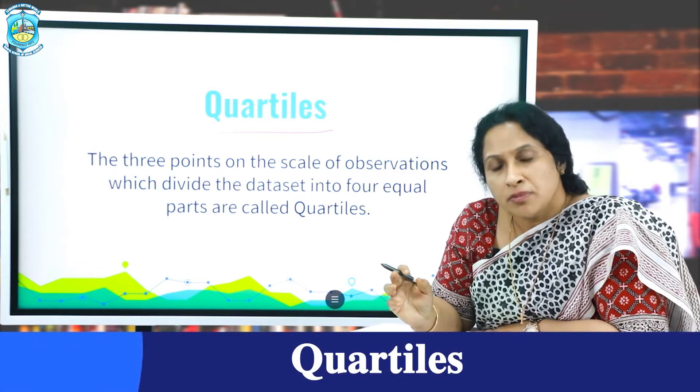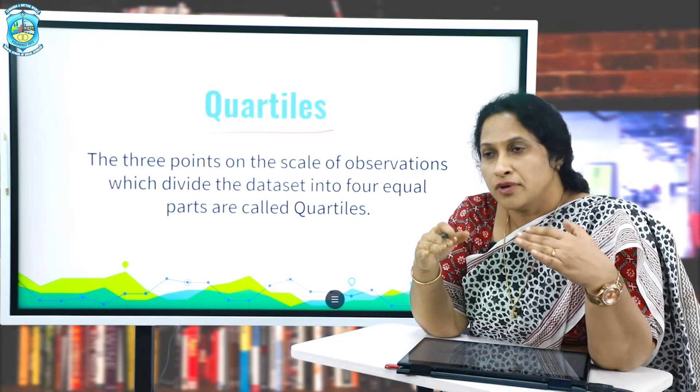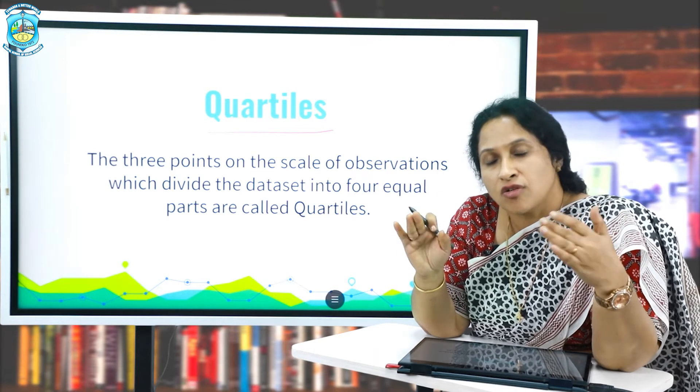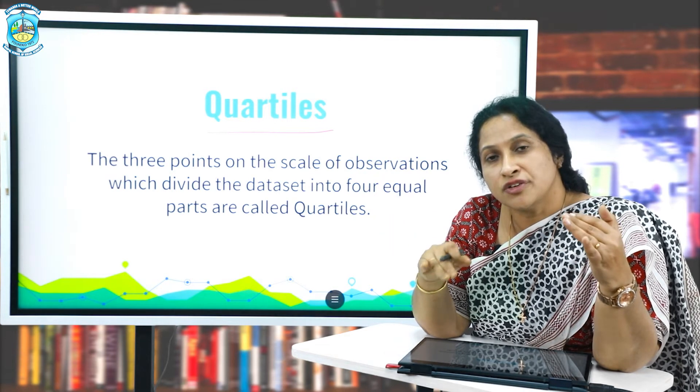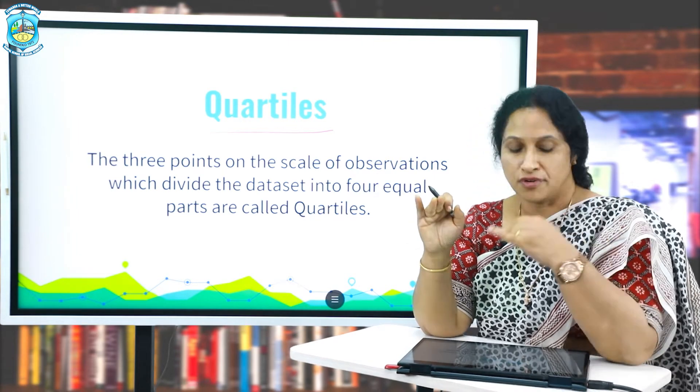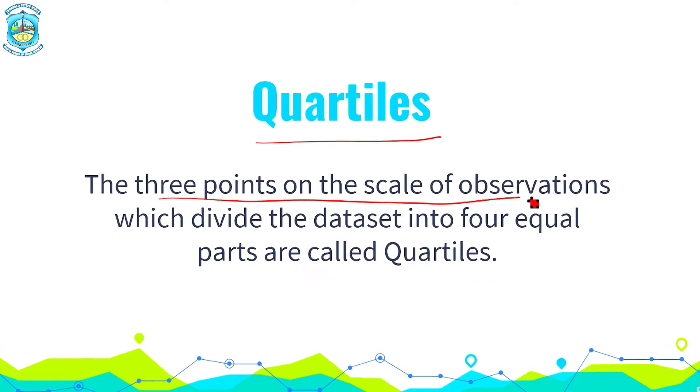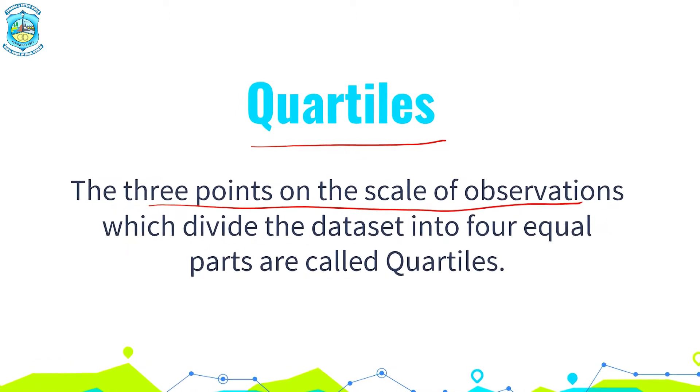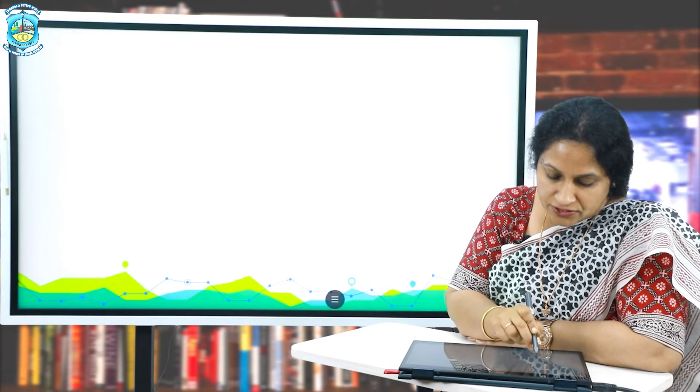So that gets us to our next point of discussion today, which is the quartiles. So what do you mean by quartiles? I will try to draw a parallel. You might have heard in your previous classes, shade quarter of a circle. So when you are asked to do a quarter of a circle, you will be dividing the circle into four equal parts and shading one part of it, one fourth of it. So similarly, in statistics, the three points on the scale of observations which divides the data set into four equal parts is called as quartiles.